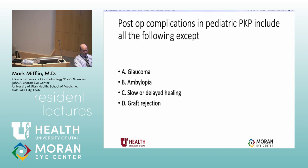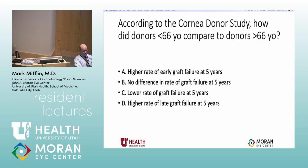A little bit of a slightly tricky question on Dr. Reapha's part. According to the cornea donor study, how did donors under 66 compare to donors over 66 years of age — higher rate of graft failure at five years, no difference in rate of graft failure at five years, lower rate of graft failure at five years,